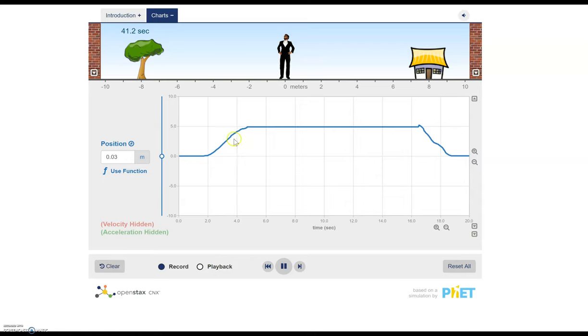So when we're moving to the right, we have a positive slope. Remember slope is just the rise over run of a graph. So the change in y over change in x. And then when we're moving to the left, we have a negative slope.